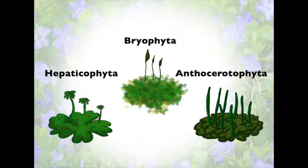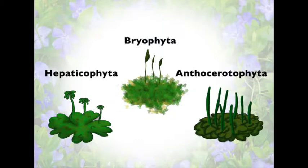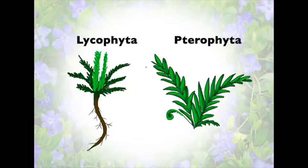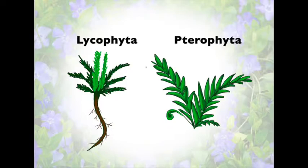Next, we will be talking about vascular plants. There are two types of seedless vascular plants. One of which is lycophyta, which is club mosses, and the other is pterophyta, which is ferns, whisk ferns, and horsetails.